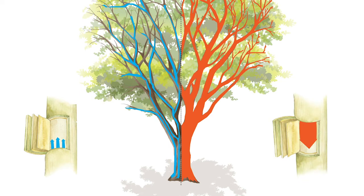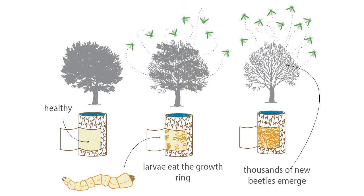The feeding larvae of the emerald ash borer chew through those straws as they eat their way to maturity. During low levels of infestation, a tree can tolerate a small amount of damage, but since EAB have no natural predators in North America, they multiply very fast. Their rapidly expanding populations eventually cause so much damage below the bark that the tree can no longer sustain itself.